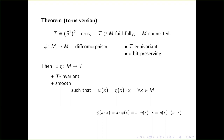Because the action is faithful, it is free on an open dense set. So eta on the open dense set is unambiguous. The only question is whether it extends smoothly to the rest of the manifold beyond the open dense set where the action is free.